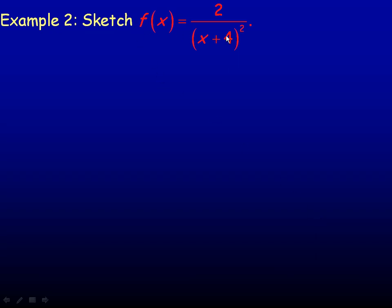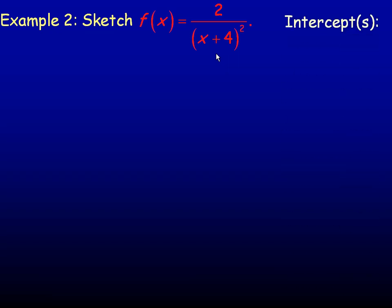In the second example, we are asked to sketch this rational function. Let's take a look at intercepts first. If I put 0 in place of x, I get 2 over 0 plus 4, which is 4, and 4 squared is 16. So I have 2 over 16, which reduces to 1 eighth. So f of 0 is 1 eighth — that is the y-intercept.